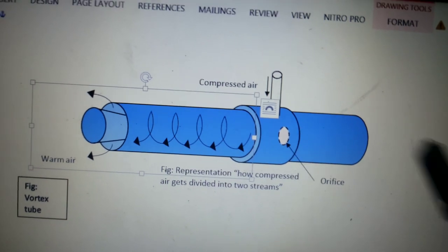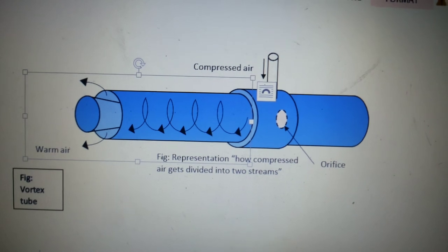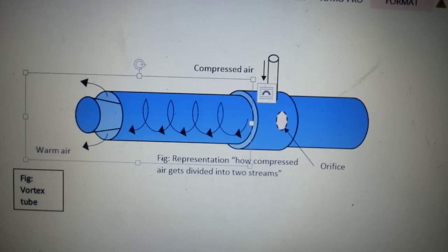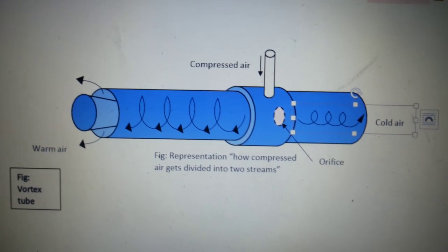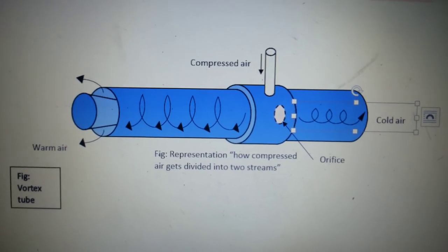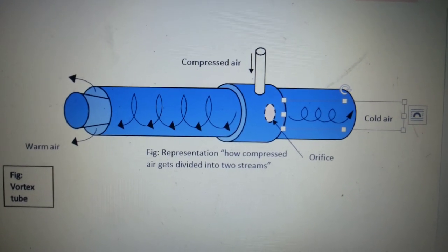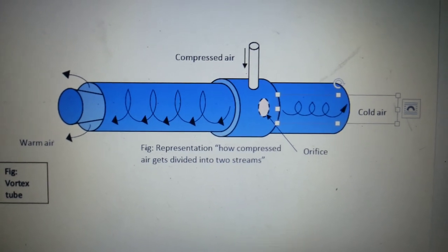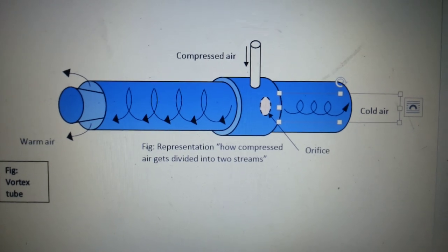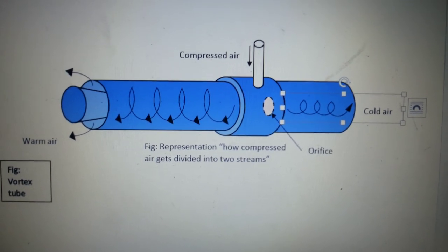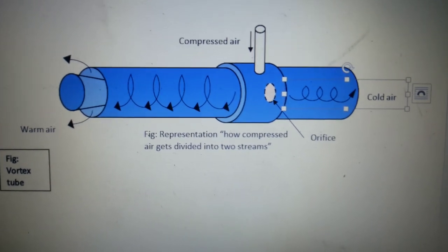The outer vortex is at higher pressure and becomes warm, while the inner vortex which is at low pressure is cooled. As you can see, this is the construction and working of the vortex tube and how it is represented in the diagram.